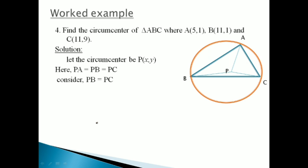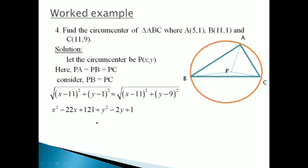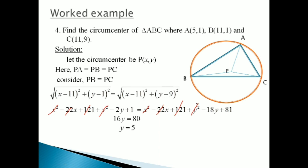Same way, consider PB = PC। Substituting the formula for PB and PC, squaring both sides, X² and X² cancel, −22X and −22X cancel, 121 and 121 cancel, Y² and Y² cancel। After solving: 16Y = 80, so Y = 5। And X का value तो हमें पहले ही मिल गया था — 8। So the circumcenter P has coordinates (8, 5)। Distance formula को हम इस तरह से किसी भी चीज में apply कर सकते हैं। Main points to remember याद रखोगे तो almost सारे distance formula के questions easy हो जाएँगे।